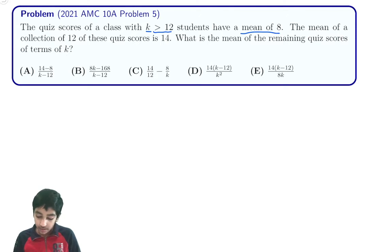So what is the mean? Mean is just going to be the total sum divided by the number of terms. In the beginning, since the mean of scores of all k students is 8, we can see that there's going to be 8 times k, which is 8k total points amongst the whole class.